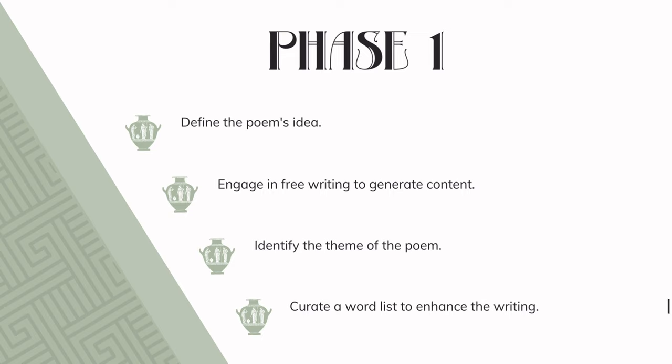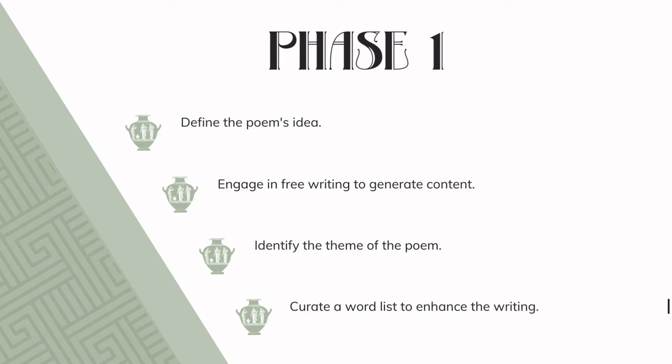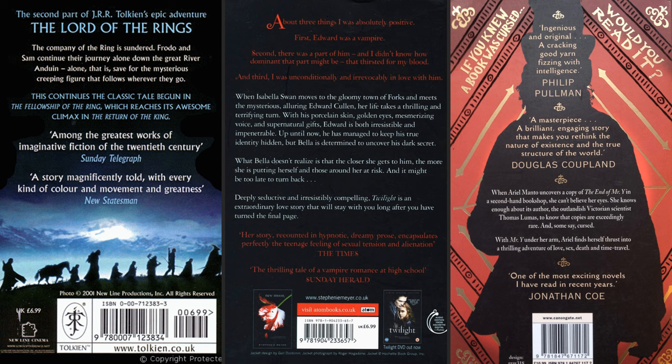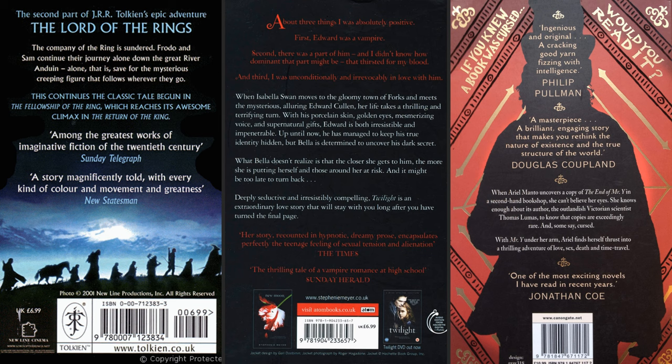Example of the writing and revision process. Phase 1: Once you have the poem's idea, free write some content, identify its theme, curate a word list, poetic form, and the structure in the way it will be told. Now it's time to add more details about the poem. The best way to describe a poem is to approach it like a blurb that captures its essence, helps you comprehend it from the reader's point of view, and clarifies your thoughts for Phase 2 writing.